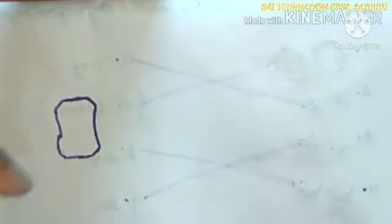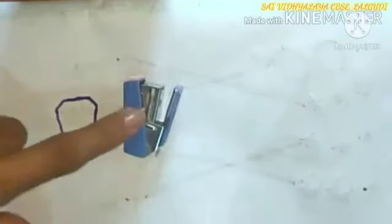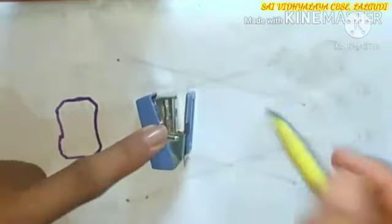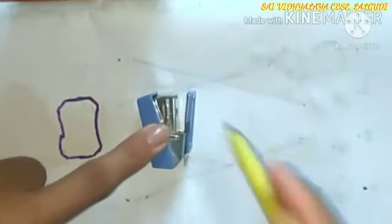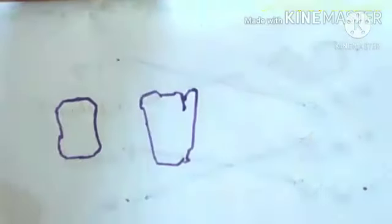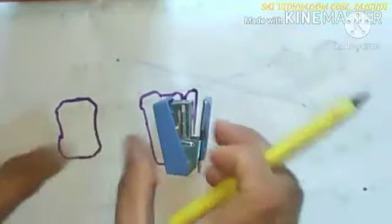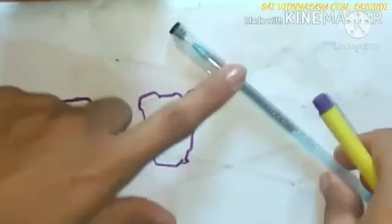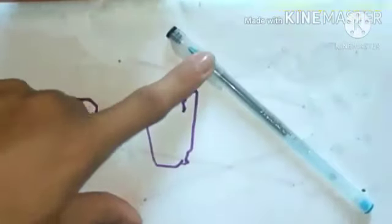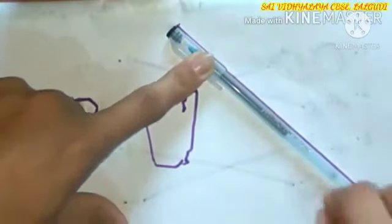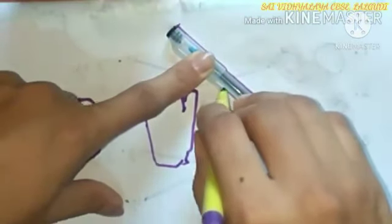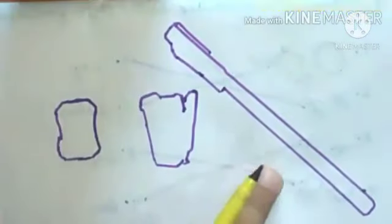Next, I have Stapler. First, hold the Stapler properly. Now, I am tracing it. This is the trace of a Stapler. Next, I have a pen. Let's trace this. Now, I am tracing the pen. That's all. It's very easy to do tracing.